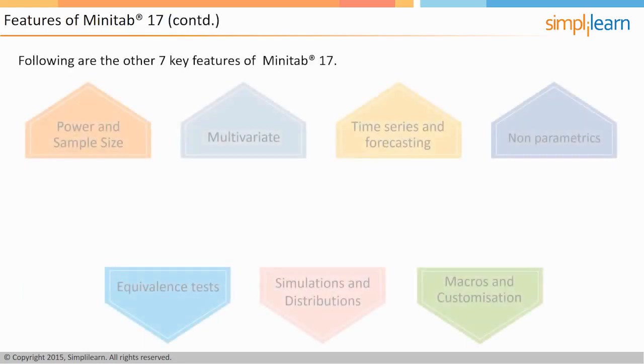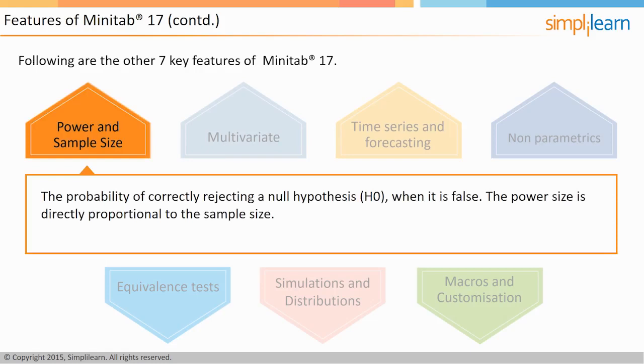On your screen, you can see the other seven key features of Minitab 17. Let's learn more about each of them. We begin these set of features with power and sample size. The power of a test can be determined as the probability of correctly rejecting a null hypothesis when it is false. The power size is directly proportional to the sample size. This means as the sample size increases, the power also increases.